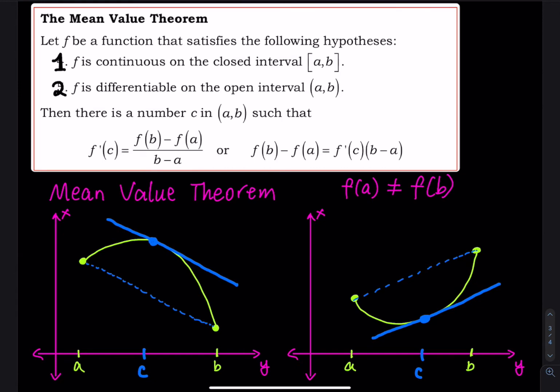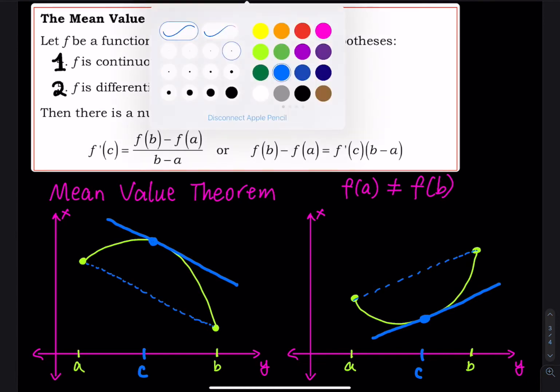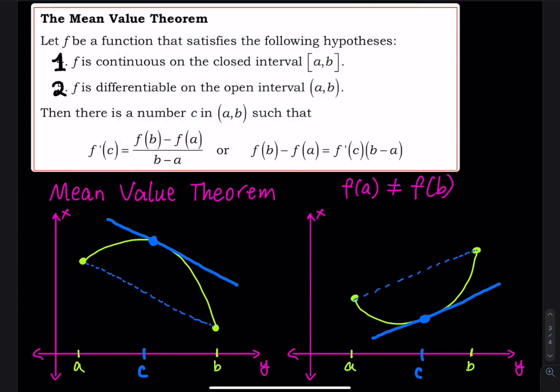To find the slope of the blue dashed line, you use (y2 − y1) / (x2 − x1), which you learned in elementary algebra. In this problem, that is f(b) minus f(a) divided by b minus a, and that equals f'(c). So f'(c) corresponds to the slope shown by the blue line right there.